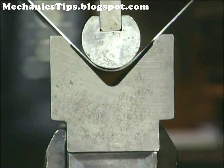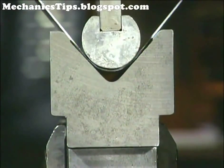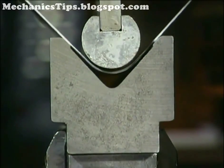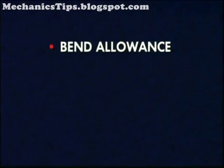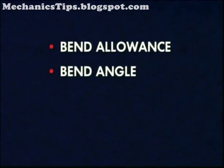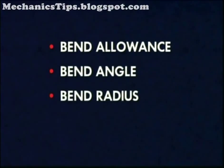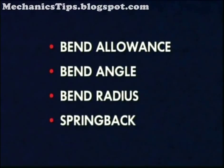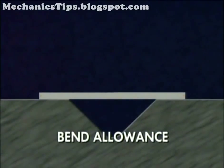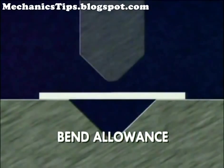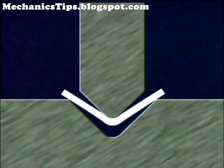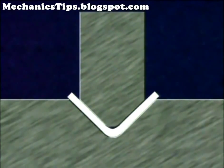The principal terms used to describe bending on press brakes are bend allowance, bend angle, bend radius, and spring back. Bend allowance is the pre-bent length of material that must be included in a blank to allow for any deformation that occurs due to the bending operation.